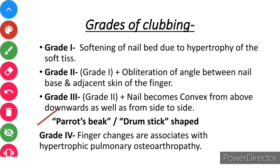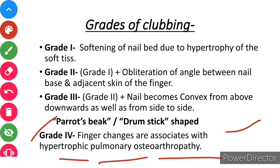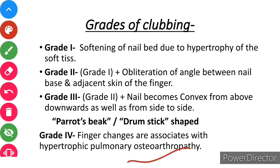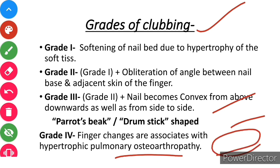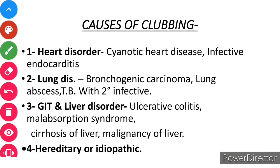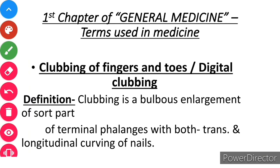In grade three, the nails take on the proper term of parrot's beak or drumstick shape. Grade four finger changes are associated with hypertrophic pulmonary osteoarthropathy, which is a triad of three conditions: first, periostitis; second, digital clubbing; and third, large joint painful arthropathy. These are the four grades of clubbing.